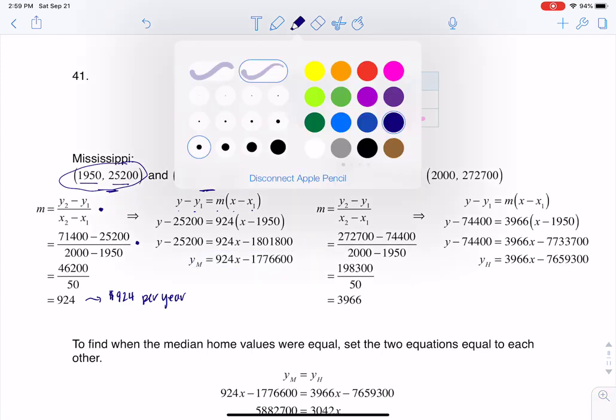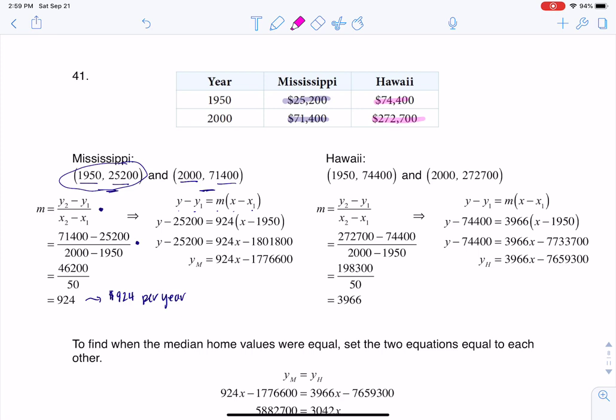And then I repeated that process for Hawaii. So if we take a look at what was happening in Hawaii, I've got my two ordered pairs, because I've got year against house value or median house value. I work through this, I find my slope. Now again, if I wanted to interpret this a little bit more, this is telling you that on average, house prices in Hawaii were increasing by about $3,966 per year.